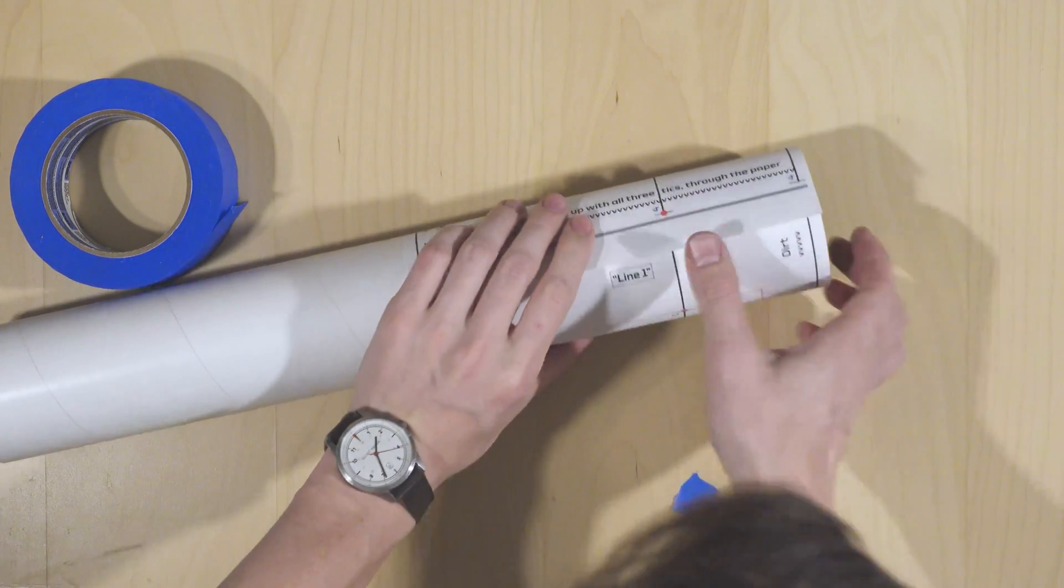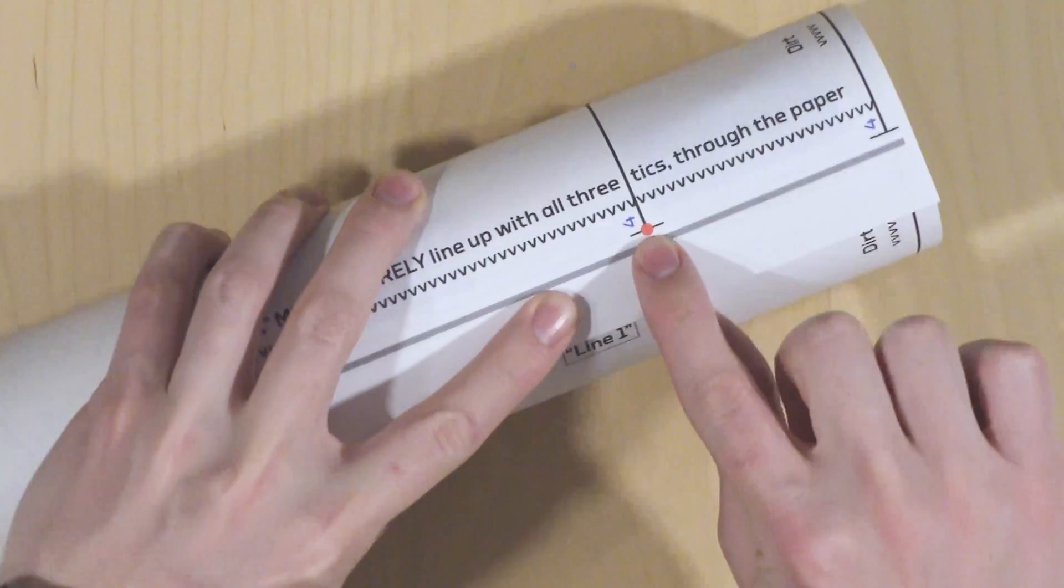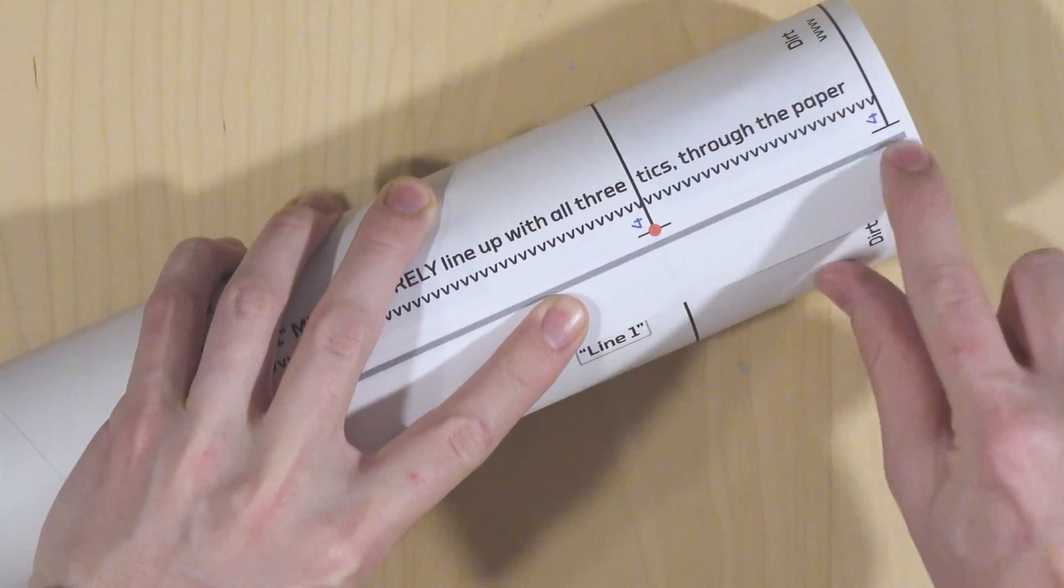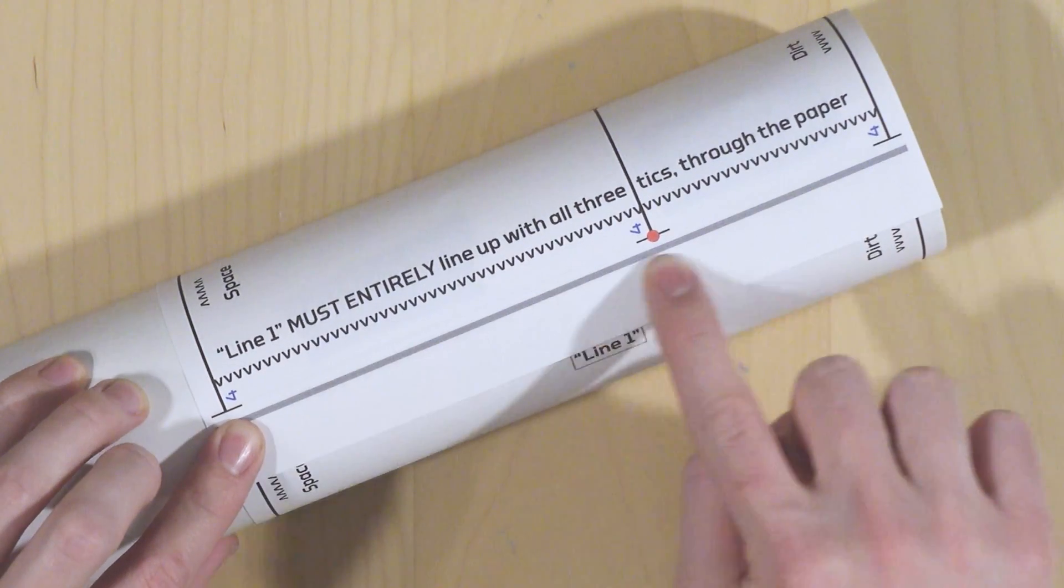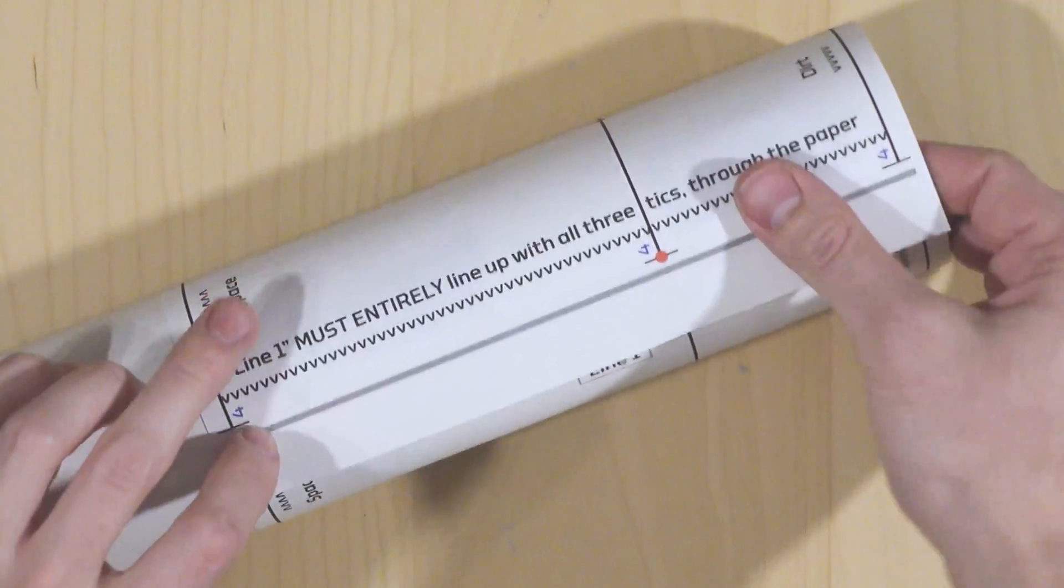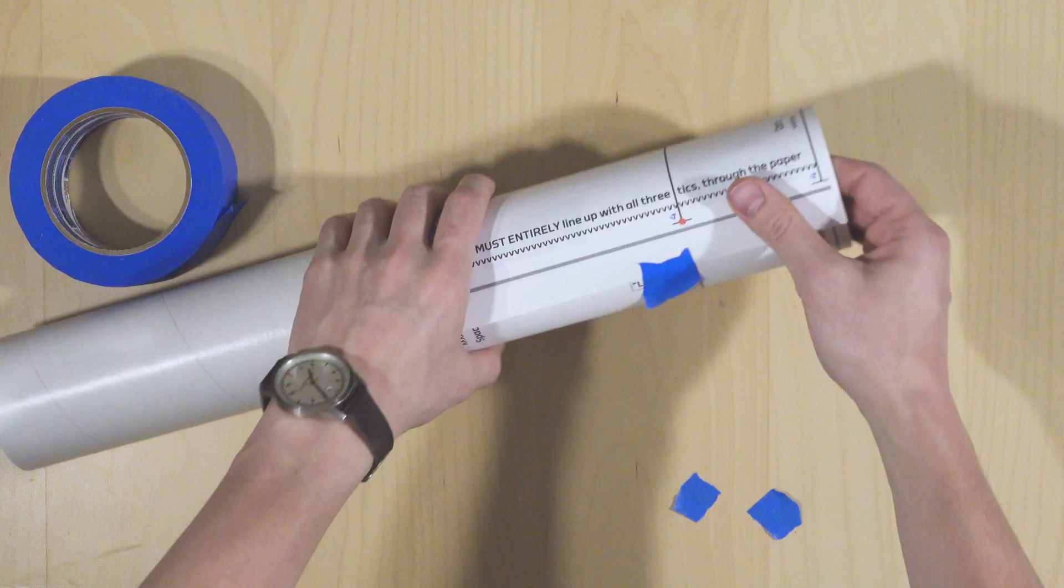Once the paper's taped to the vehicle, wrap the far side around it, and now it's time to make sure it's all lined up. Look closely through the paper. You should see a line that lines up with all three ticks on the top, middle, and bottom of the paper. Once those are lined up, you can go ahead and tape it down.